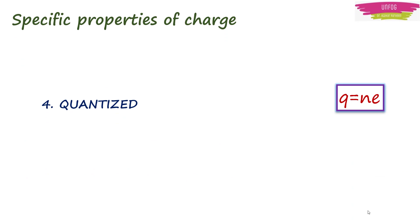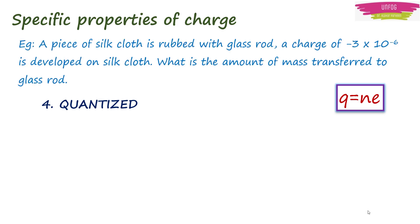By having the idea of quantization, one can calculate the amount of mass transferred from one object to another during charging. For example, if a piece of silk cloth is rubbed with a glass rod, a charge of -3 × 10^-6 is developed on silk cloth. You can now find the amount of mass transferred to the glass rod. How do you find it? We know that q = ne. Therefore, number of electrons transferred will be n = q/e.